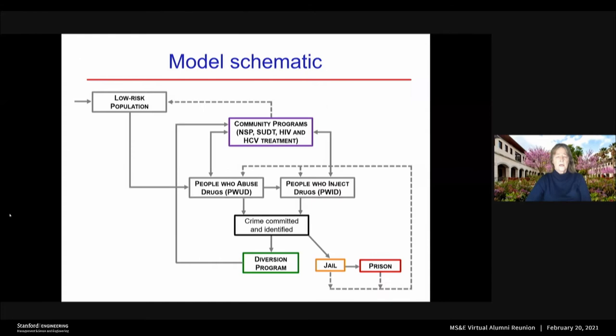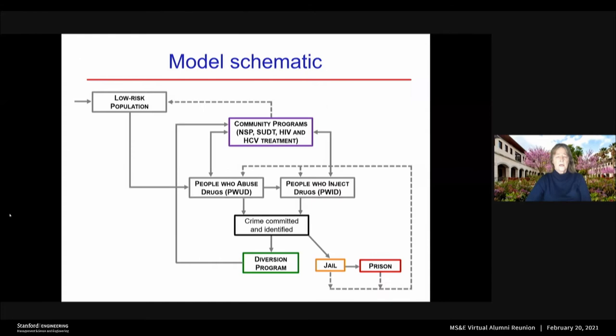The basic idea is that there are people who either inject drugs or abuse drugs but don't inject. When they commit a crime that's identified, in the typical cycle they go to jail, possibly to prison, and then probably right back out to using drugs. But with a diversion program, the idea is maybe you could convince people to get into community programs — needle and syringe programs, substance use disorder treatment to treat their drug addiction, and treatment for HIV or hepatitis C if they're infected — and we would hope we could get them to treat their drug addiction so they would then not be drug users.